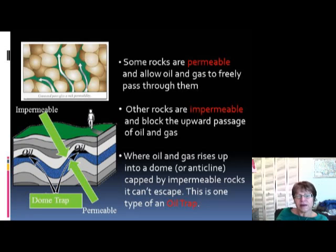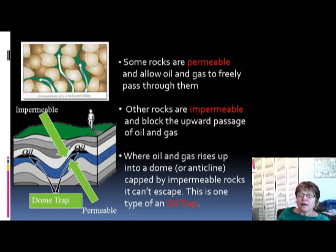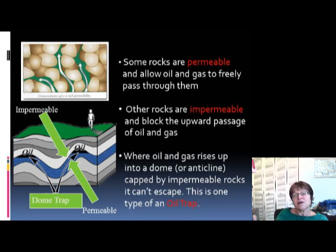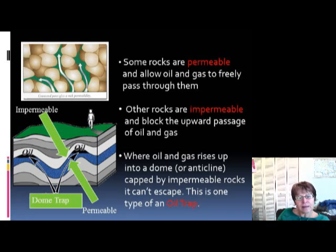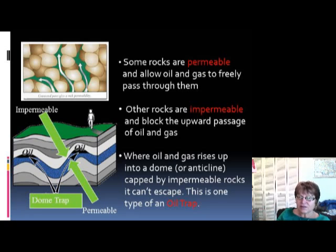We need permeable rocks for gas and oil to migrate through, and then we need something that stops them — impermeable rocks. Clay, for example, is impermeable. We learned about this in physical geology with aquifers and aquicludes. For oil to migrate, we need aquifers; for oil to be trapped, we need aquicludes. The trapping is important because oil companies look for oil traps, drill into them, and extract the oil. Wherever the oil cannot migrate anymore is what we call an oil trap.